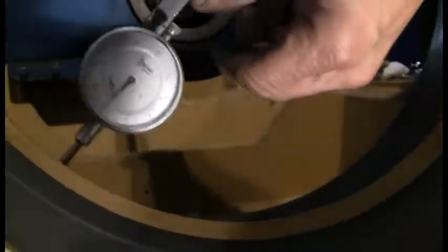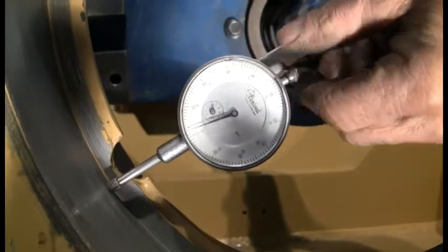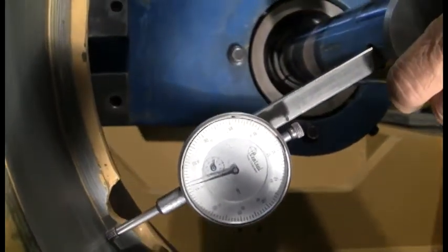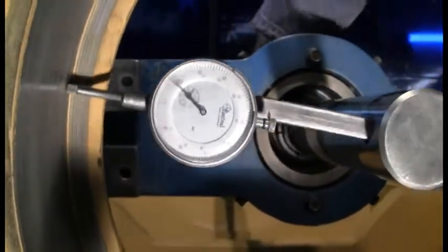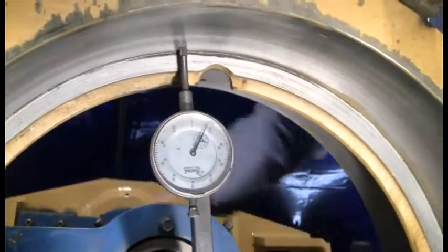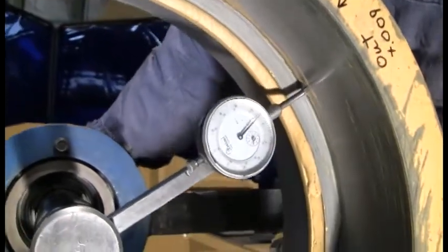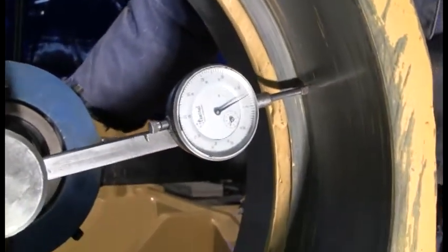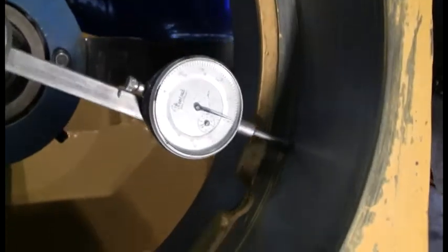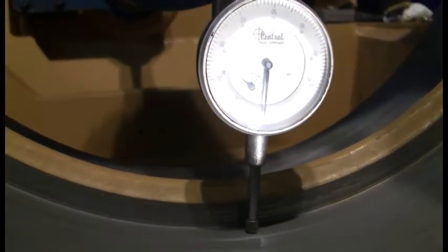Now we're going to move to this other hole, and you'll be able to see what we found here. We're fifteen, sixteen thousandths in on that side, and we're about six thousandths out on this side. Coming back down, as you can see, there's zero there.